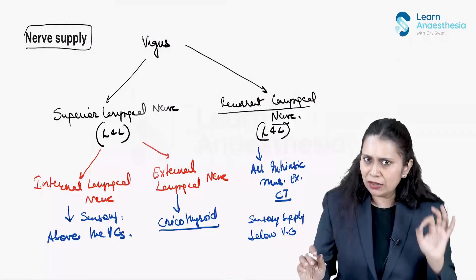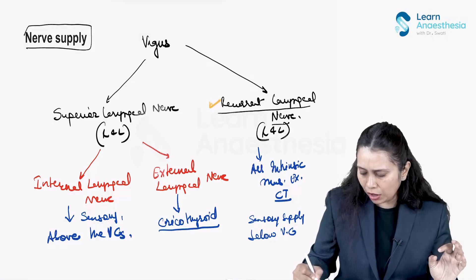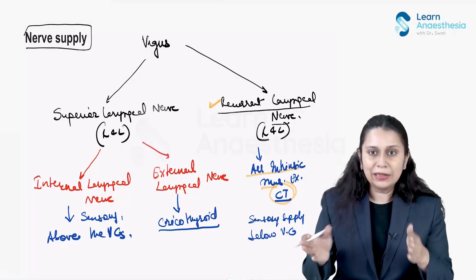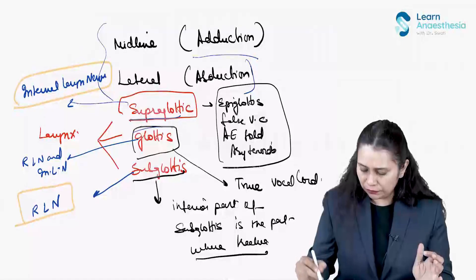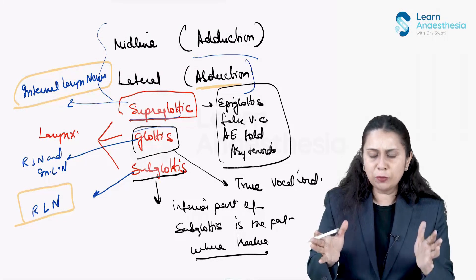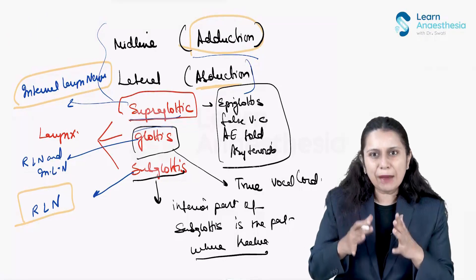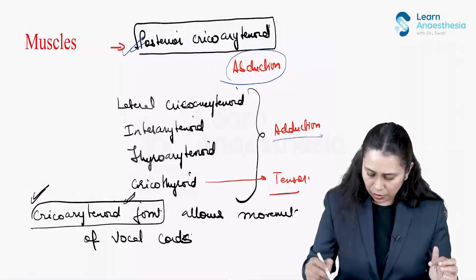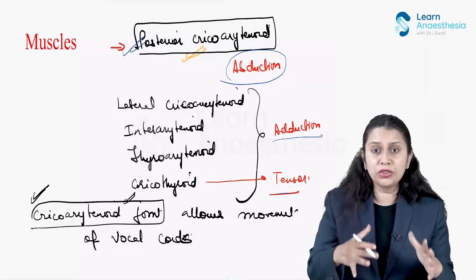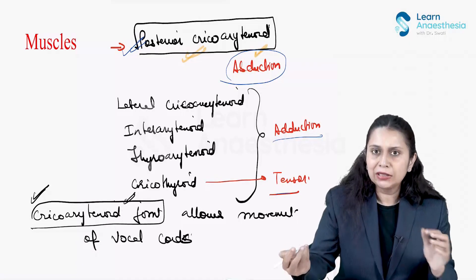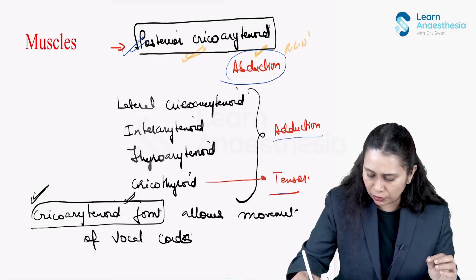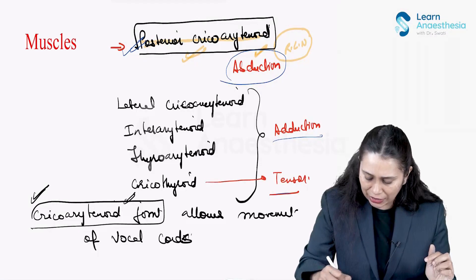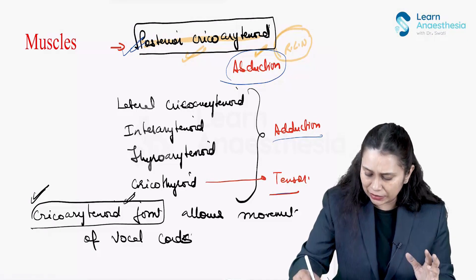Before going into that, let us revise. Recurrent laryngeal nerve is supplying all intrinsic muscles except cricothyroid, and cricothyroid is responsible for adduction. For abduction, the posterior cricoarytenoid muscle is responsible, and this is supplied by the recurrent laryngeal nerve.